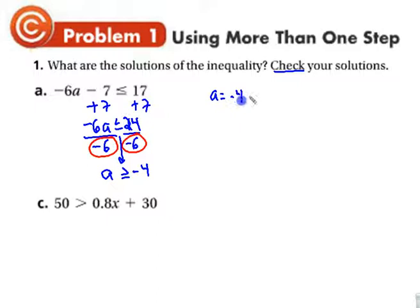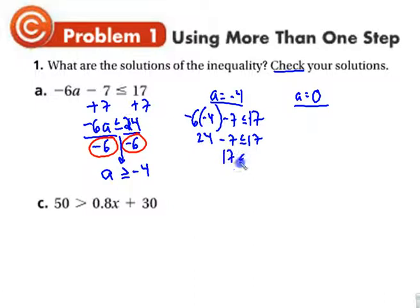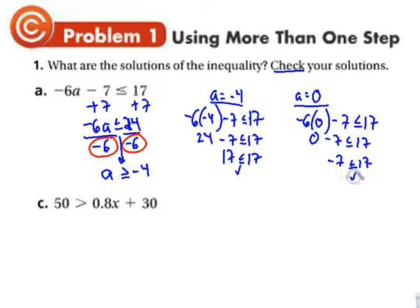I flip the inequality because if I don't, what's left is not true. Now I'm going to check it. Remember, I'm going to pick the number itself and then something in the shaded region, something bigger than negative 4, so I pick 0. I get 24 minus 7. Yep, that's true.